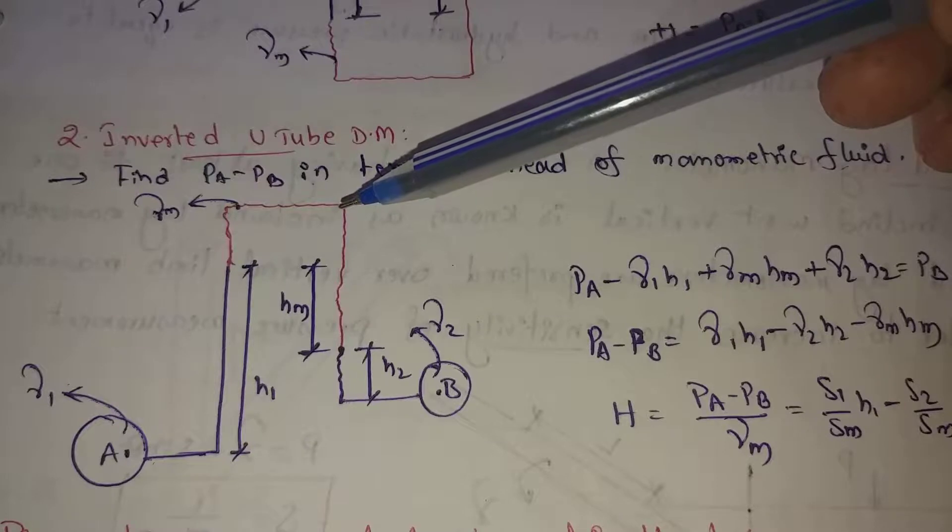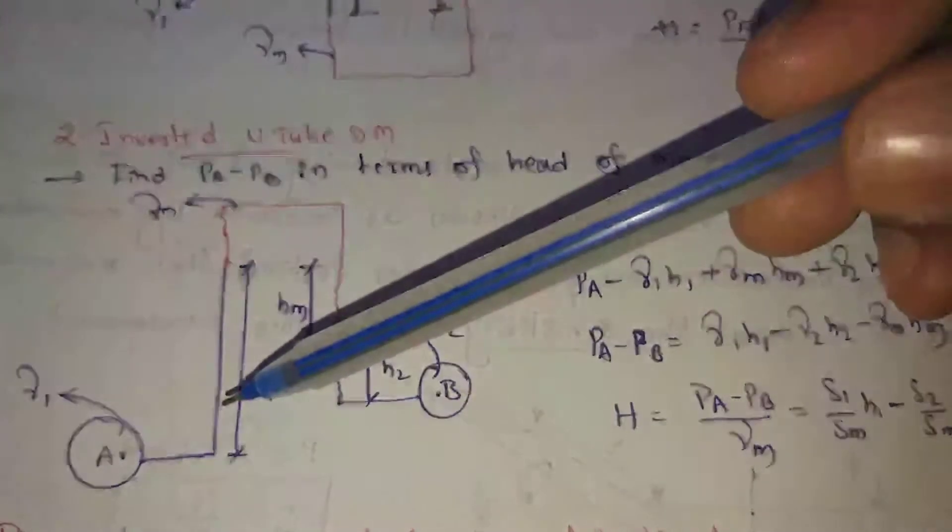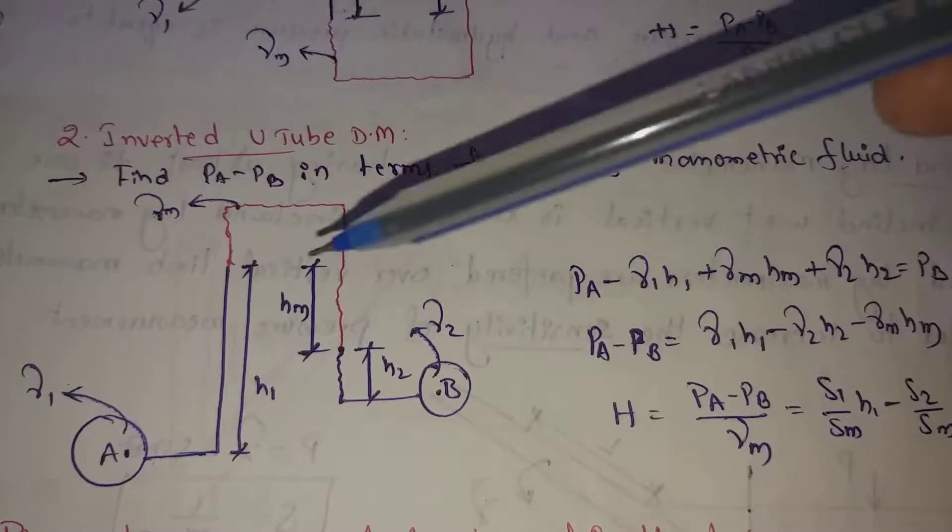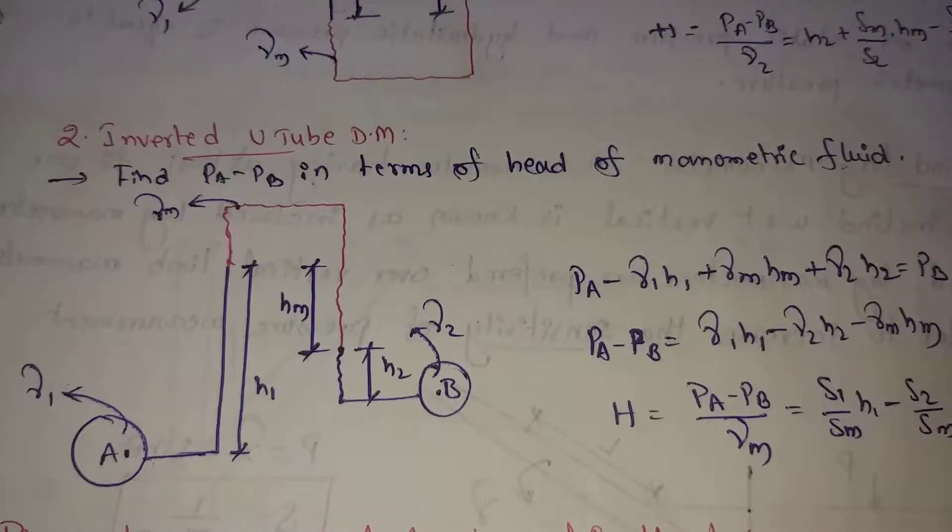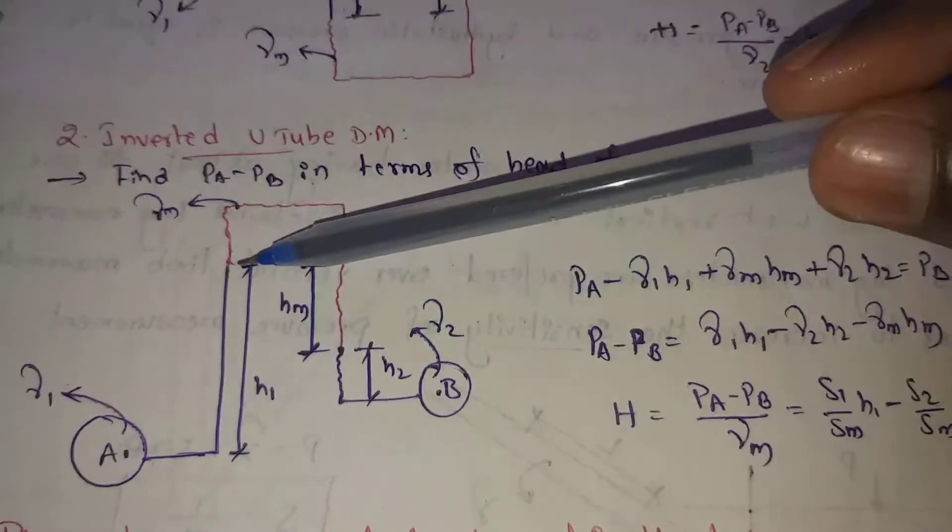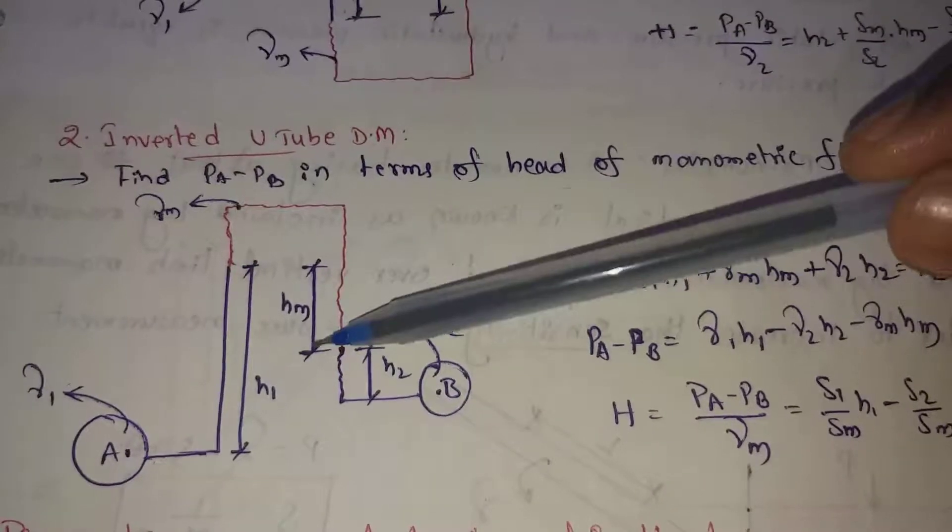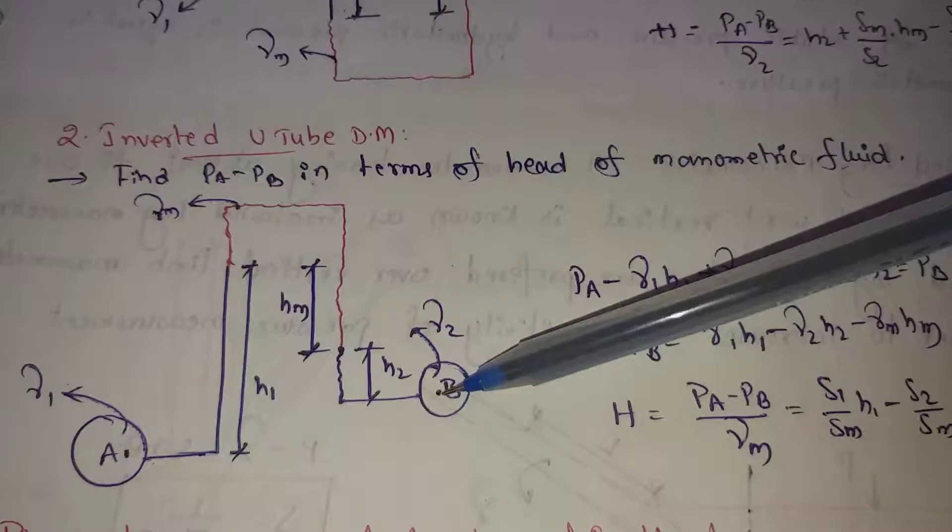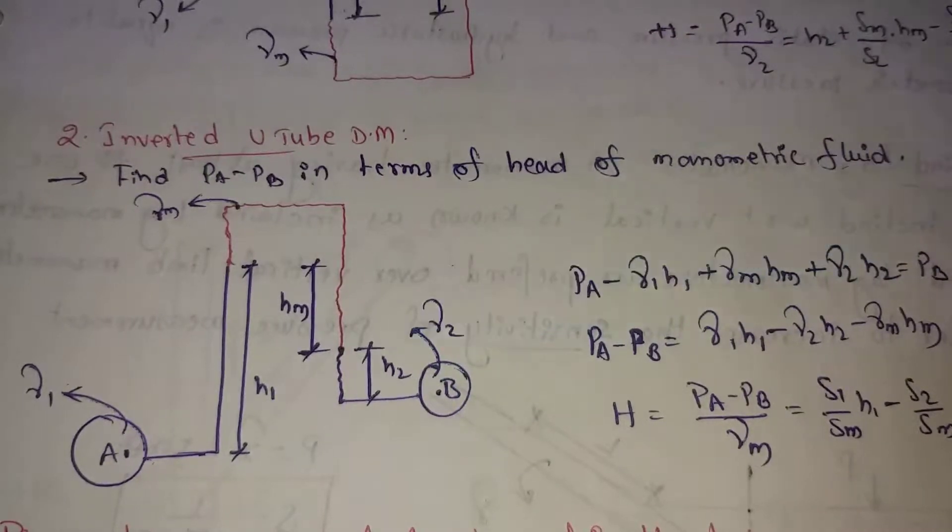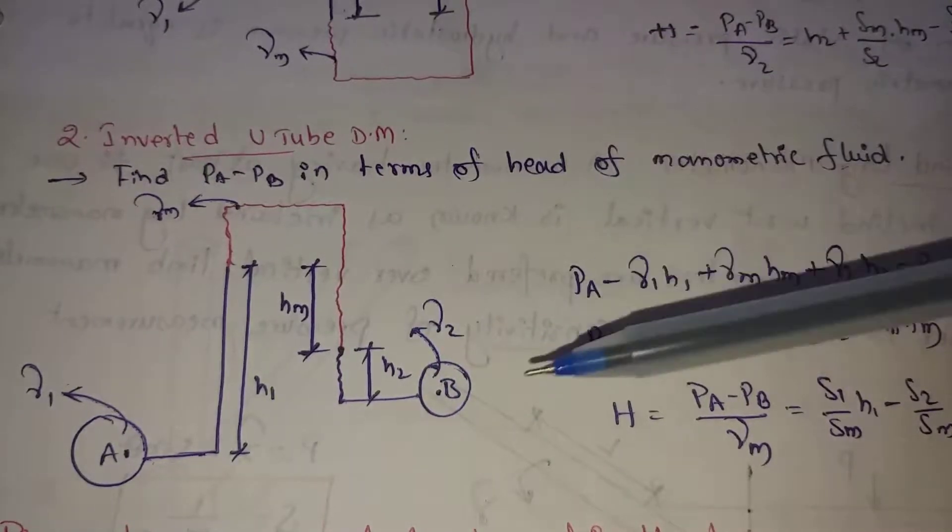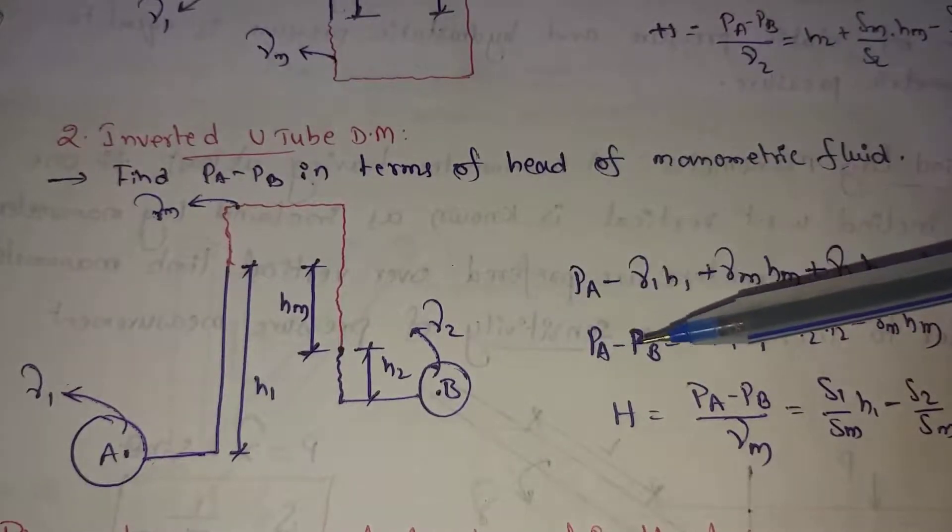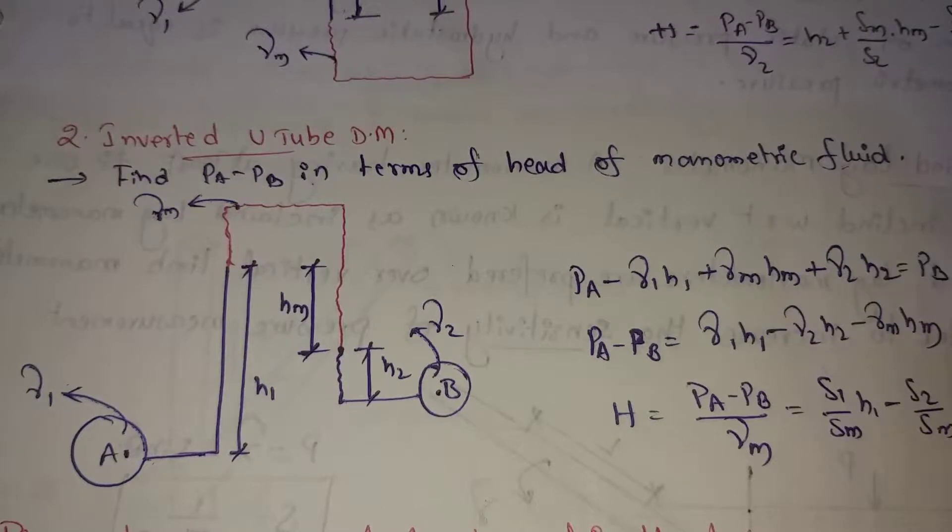So that way, this point is here. This height difference is the manometric fluid height difference hm. That way, this B pipeline height is the pressure difference with h2. So that way, this B pipeline specific weight and working fluid specific weight is gamma2. So PA minus PB, evaluate this value in inverted U-tube manometers. Pressure difference can be found out.